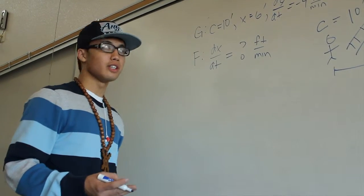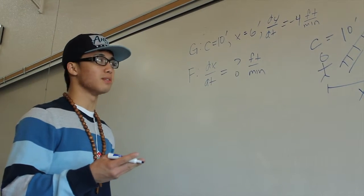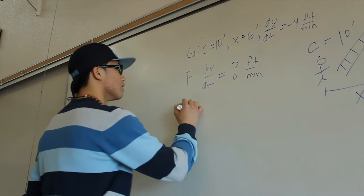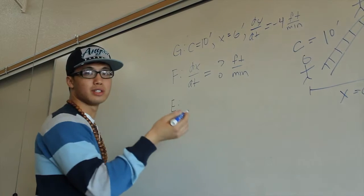So step three, in order to solve your problem, you're going to have to find a relationship between all the variables and numbers that are given to you, which should result in a formula. So step three, what equation are we going to use in order to solve this?